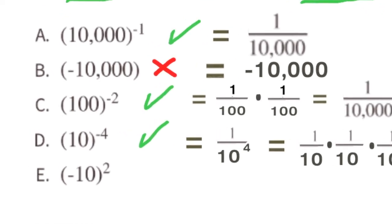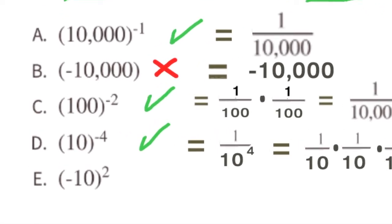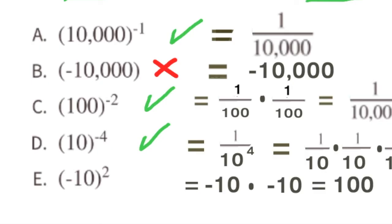Option E: Negative 10 to the power of positive 2. That represents negative 10 times negative 10, or negative 10 squared. Since a negative times a negative is a positive, and 10 times 10 is 100, the value for E is 100. So I would not select E.